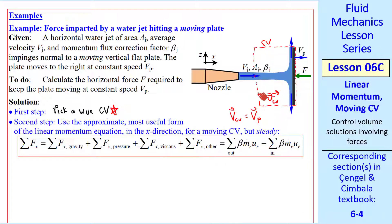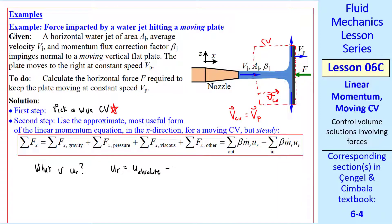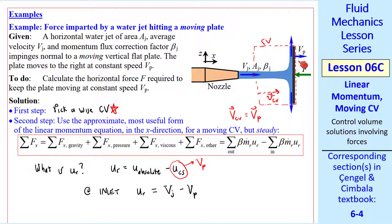The second step is to use the x component of the equation without the unsteady term, since this is a steady problem from the frame of reference of the moving control volume. As the plate moves to the right, our control volume moves with it. Relative mass flow rates and velocities are simply those relative to our moving control volume. ur is the x component of velocity — u absolute minus u of the control surface. At the inlet, ur is the jet speed vj minus vp, where vp is the control surface speed in the x direction.